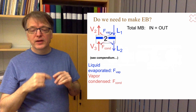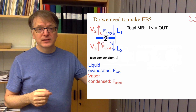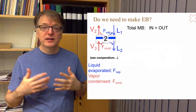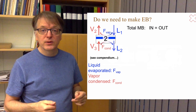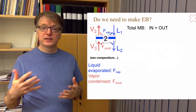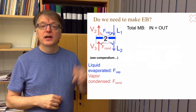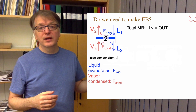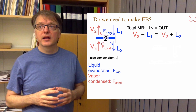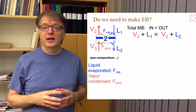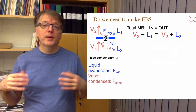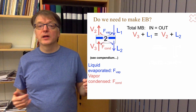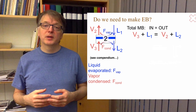Let's look at this. The index here — this is equilibrium stage 2. Index 2 means there is a flow leaving that layer: V2 is the vapor leaving and L2 is the liquid leaving that layer. Into this layer we have V3 and L1, and out we have V2 and L2. So the total mass balance simply becomes V3 plus L1 equals V2 plus L2.